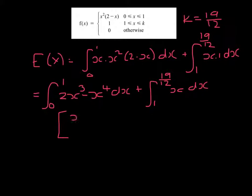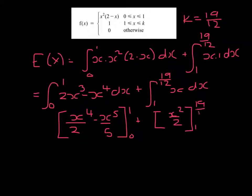That gives us x to the 4, and the 2 and the 4 are going to cancel to give 2, minus x to the 5 over 5 from 0 to 1, plus x squared over 2 from 1 to 19 twelfths.